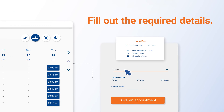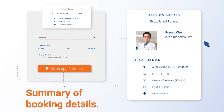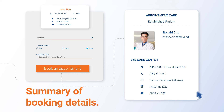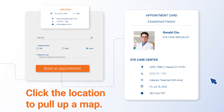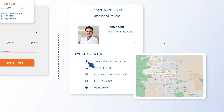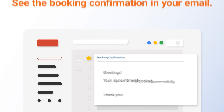Fill out the required patient details, then click 'Book an Appointment.' Your appointment card displays the summary of your booking details. To pull up directions on Google Maps, click the location. If you want to double-check, open your email to see the booking confirmation.